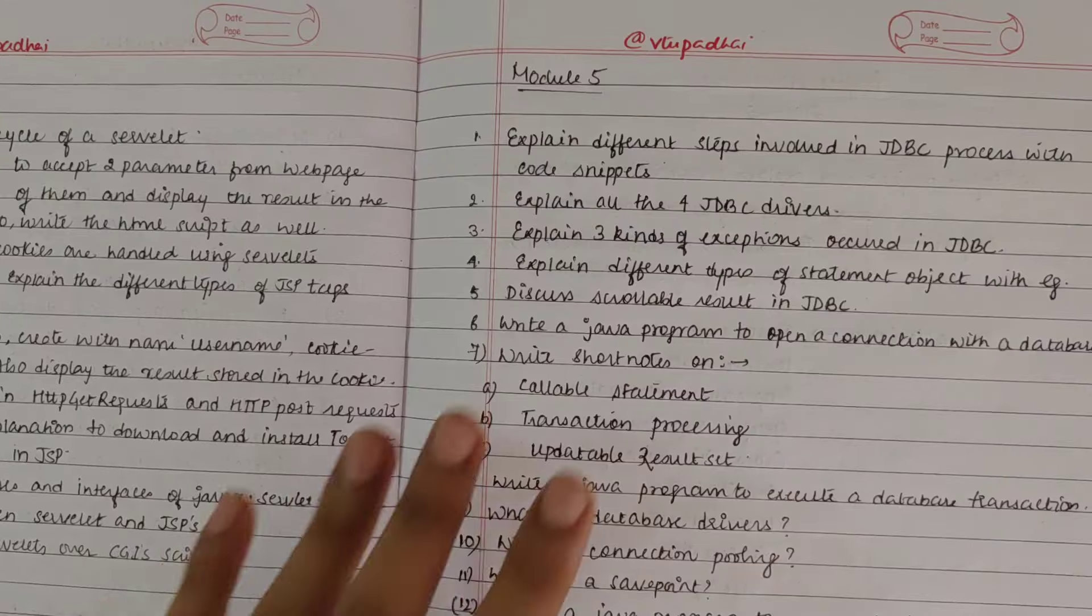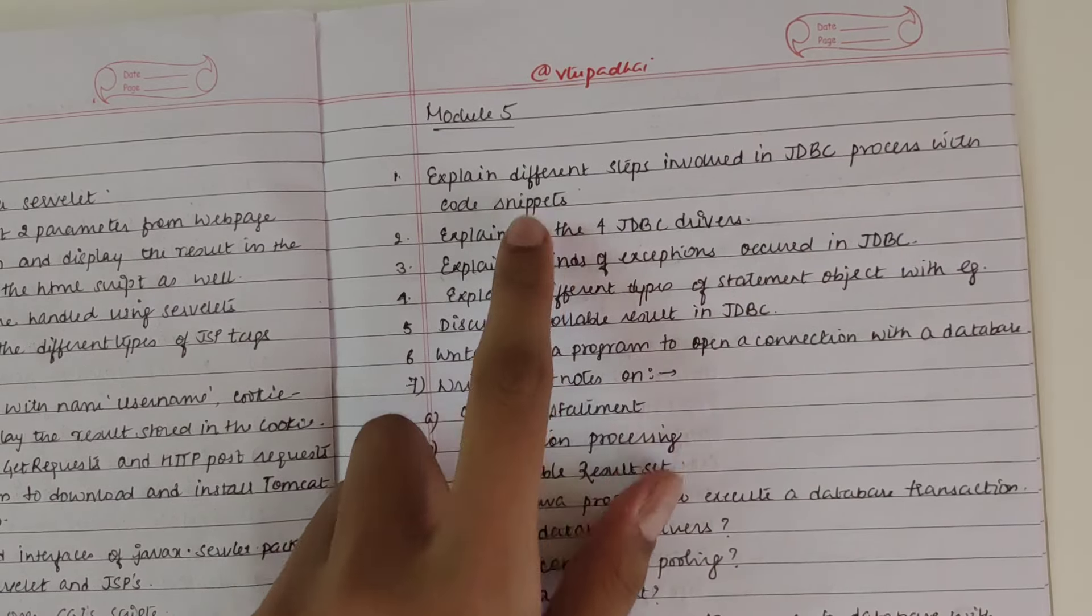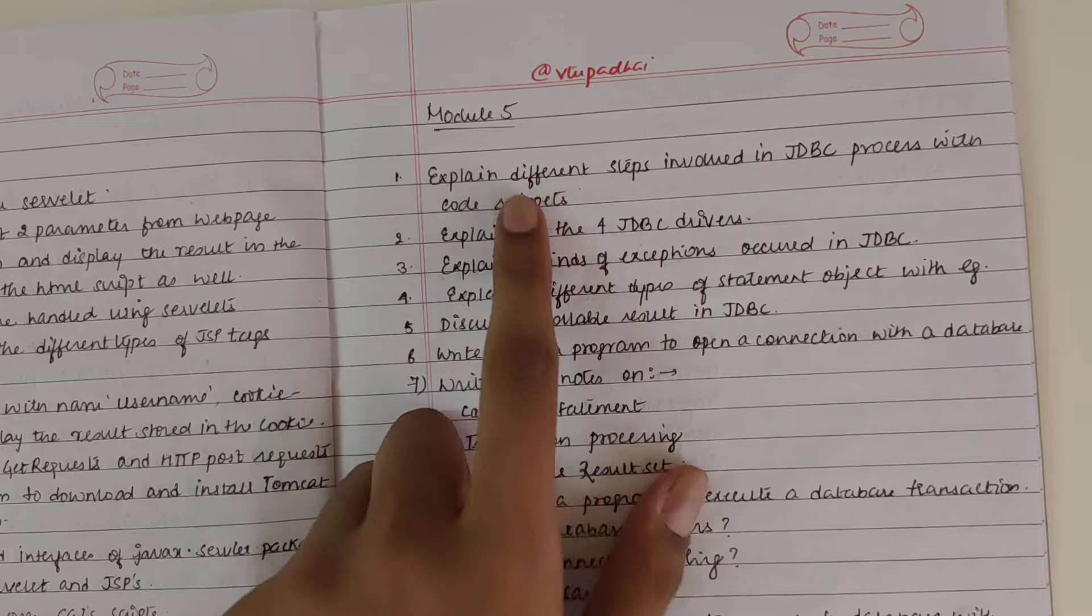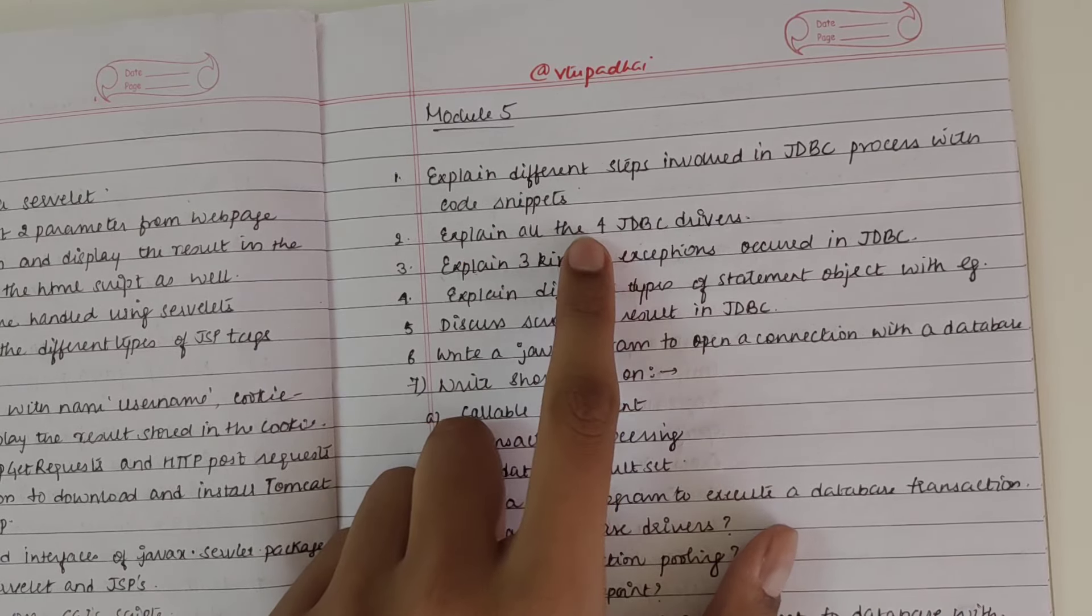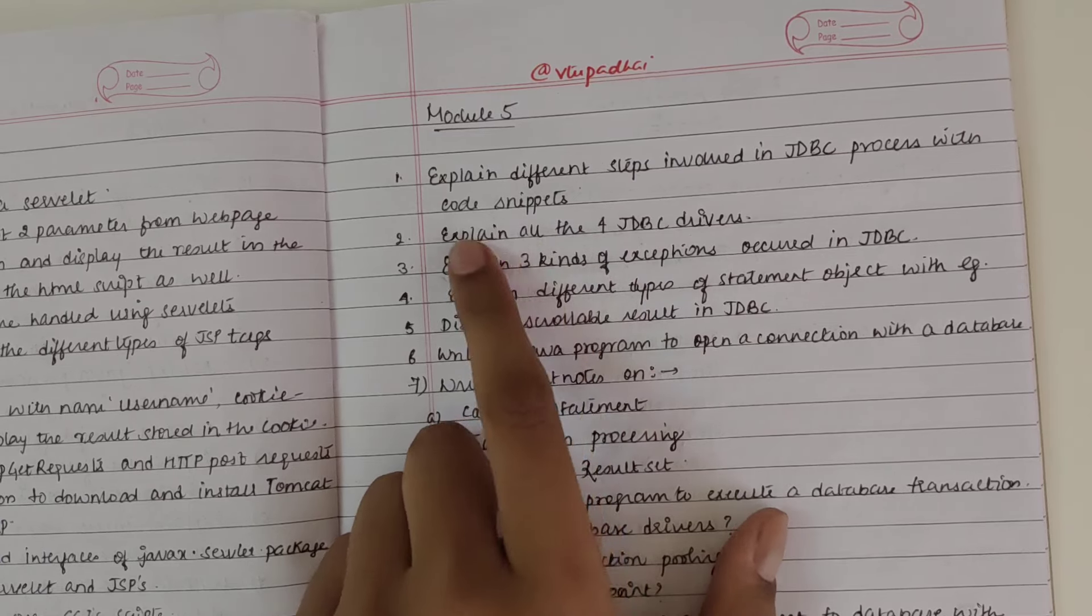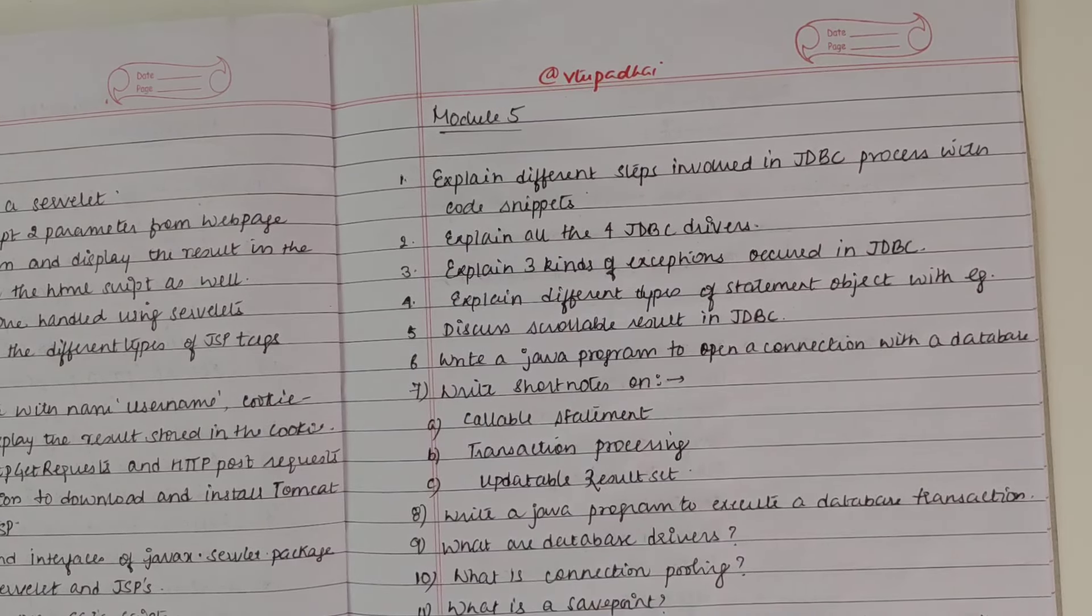Last module, Module 5: JDBC. First question: explain the different steps involved in JDBC process with code snippets. You have to write each individual code snippet for each step: initializing the JDBC driver, then executing a query. All these things have been already explained in the video. Explain the four types of JDBC drivers.